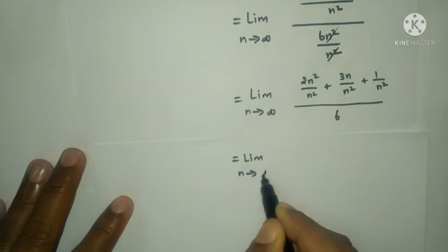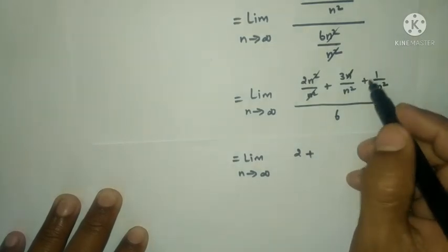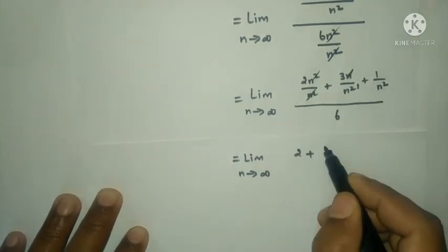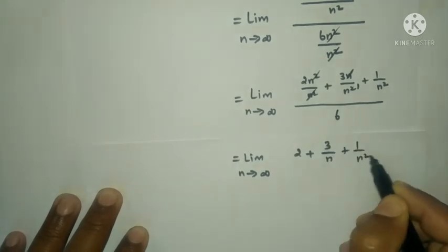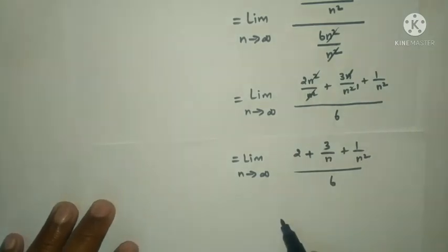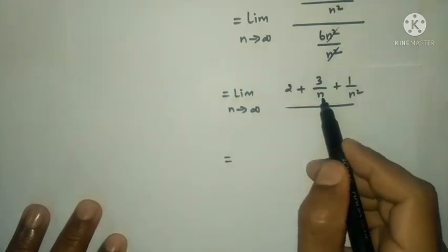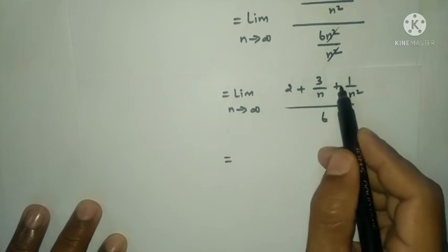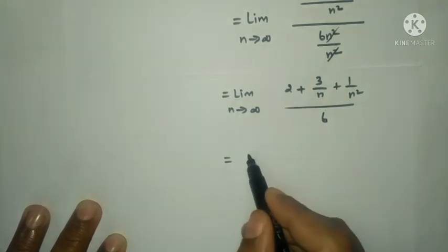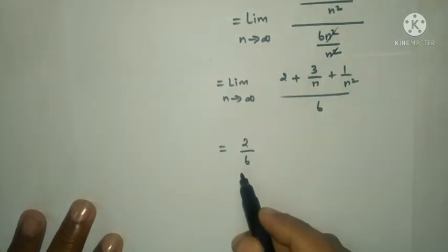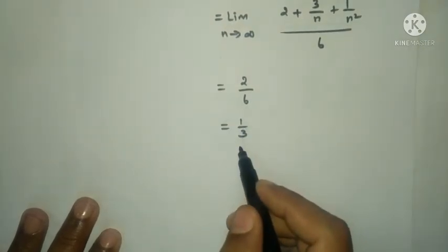Taking the limit as n tends to infinity: 2 plus 3/n plus 1/n² all over 6. As n approaches infinity, 3/n and 1/n² approach 0, giving 2/6 = 1/3. The answer is Option D: 1/3.